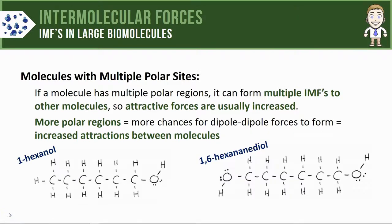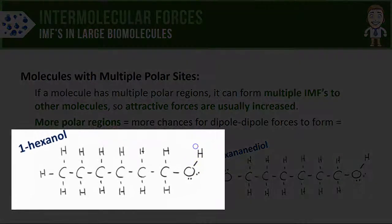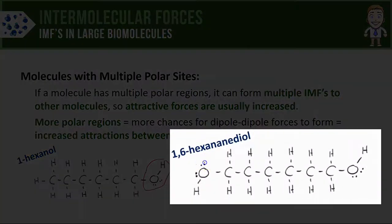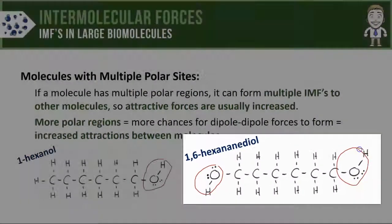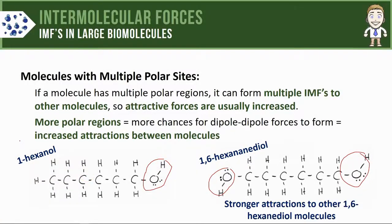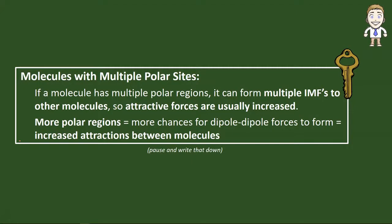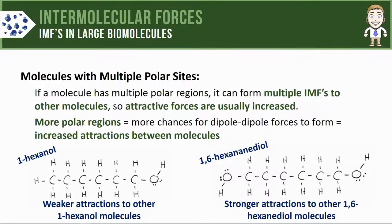We can use this to make comparisons between different substances, like 1-hexanol shown on the left or 1,6-hexanediol shown on the right. 1-hexanol seems to have just one polar region with oxygen bonded to hydrogen, whereas 1,6-hexanediol has two. Based on that, you can make the statement that 1,6-hexanediol molecules will form stronger attractions to other 1,6-hexanediol molecules, whereas 1-hexanol will form weaker ones. That's one of the key ideas for this video — make sure you pause and take a moment to write it down.